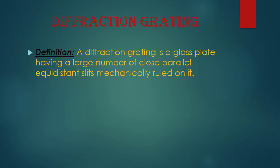A diffraction grating is a glass plate having a large number of closely spaced, parallel, equidistant slits mechanically ruled on it. We have a glass plate on which a lot of scratches are mechanically ruled — parallel scratches and equidistant.